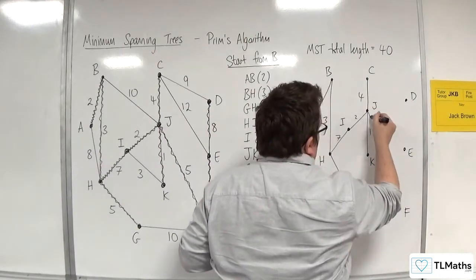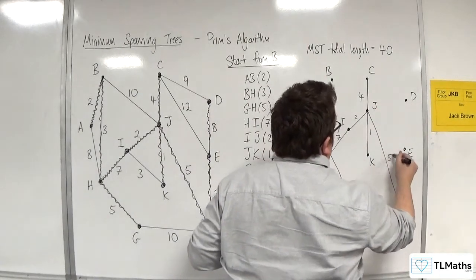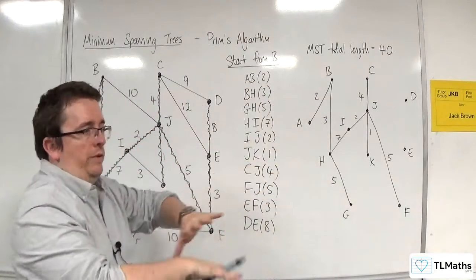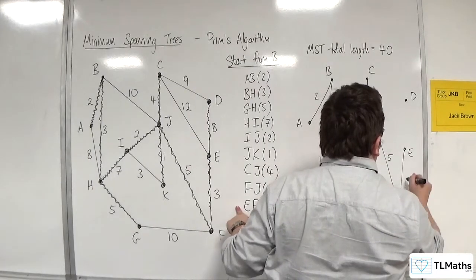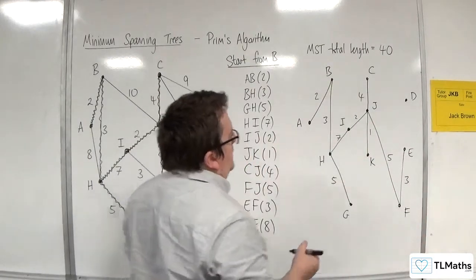So notice how it's kind of growing outwards. EF 3 and DE is 8.